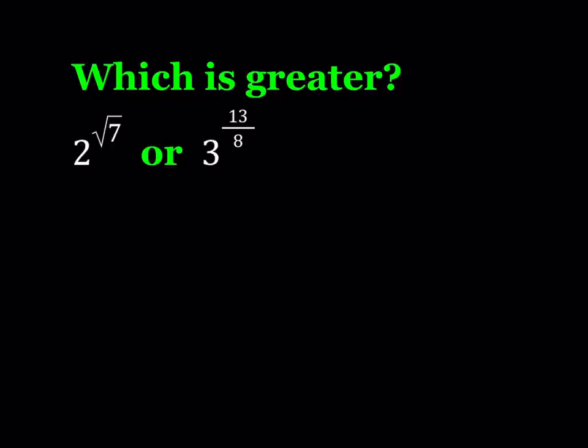Let's start with some observations. We have to compare a power of 2 to a power of 3, but there's also a radical in the exponent. So the goal is to compare square root of 7 to a rational number that we can use in the exponent, and then use the transitive property.